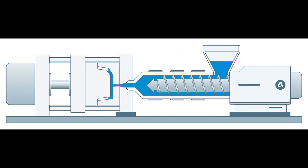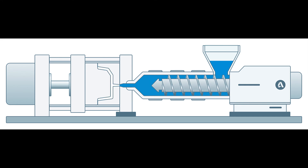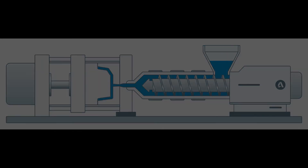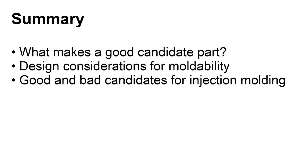Although there are many other plastic manufacturing processes, injection molding is estimated to be used for 80% of the plastic parts being produced today. In this video, we reviewed what makes a good candidate part for injection molding simulation, explained the importance of design considerations in the mold design process, and distinguished, with examples, everyday items that can be injection molded or produced by other molding techniques not suitable for injection molding simulation.